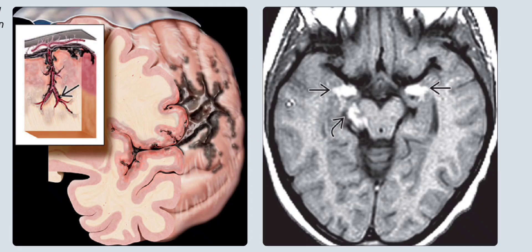Starting with the neurocutaneous melanosis cases. On the left is the graphic showing the localized dark melanotic pigmentation of the leptomeninges. The inset demonstrates the extension of the melanosis into the brain substance along the Virchow-Robin spaces. On the right is the axial T1-weighted MRI of a 6-year-old child with benign parenchymal and leptomeningeal melanosis, showing multiple foci of T1 shortening — hyperintense signal — in the amygdala indicating parenchymal involvement, and in the right ambient cistern indicating leptomeningeal disease.